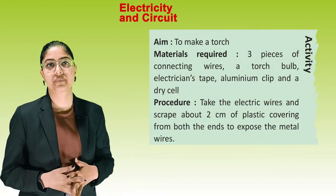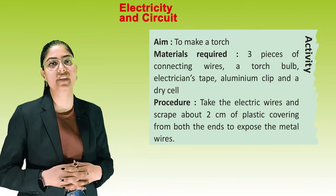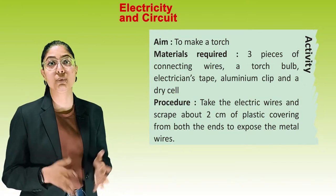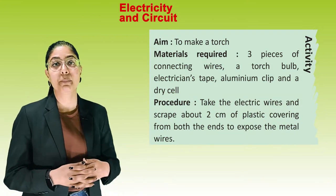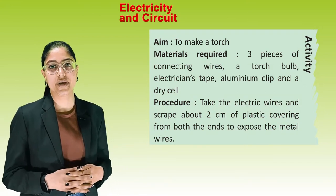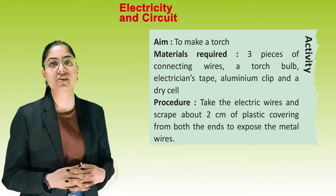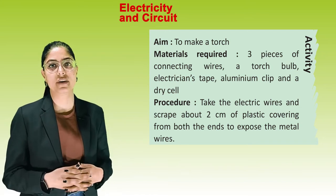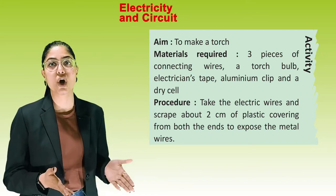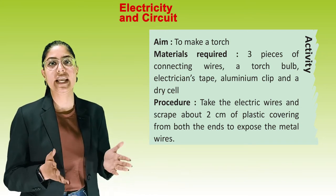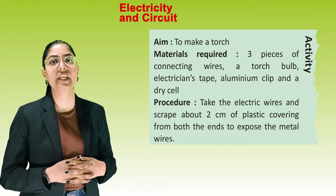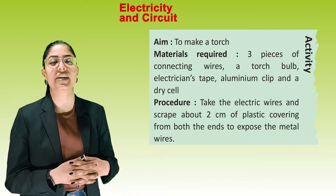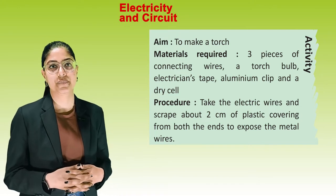Let's see an activity. Aim: to make a torch. Materials required: three pieces of connecting wires, a torch bulb, electrician's tape, an aluminium clip, and a dry cell.